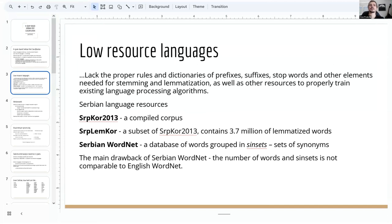What we call low-resourced languages are languages that lack the proper rules and dictionaries of prefixes, suffixes, stop words, and other elements needed for stemming and lemmatization, and other resources needed to properly train the existing language processing algorithms. Serbian language is, to some extent, one such language. The extent of existing dictionaries and other digital resources falls in comparison to English language, which affects the accuracy of language processing models.